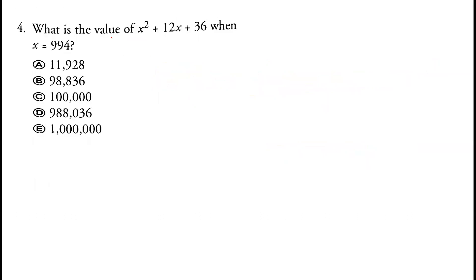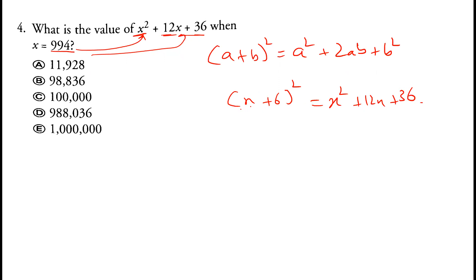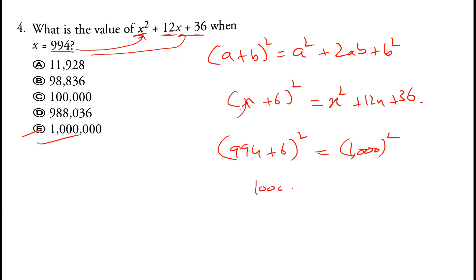What is the value of x squared plus 12x plus 36 when x equals 994? We could substitute 994, but recognizing that (a plus b) squared equals a squared plus 2ab plus b squared, we can write this as (x plus 6) squared. Substituting 994: 994 plus 6 raised to the power 2 is 1000 squared, which is 1 million. Option E is correct.